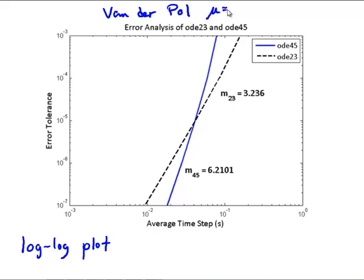And we see the slope here in dashed black lines, the slope of the ODE23 solution. Again, this is with the mu equals 1, so it's not a stiff Van der Pol equation. With ODE23, we get a slope of 3.2. And with ODE45, we get a slope of 6.2.